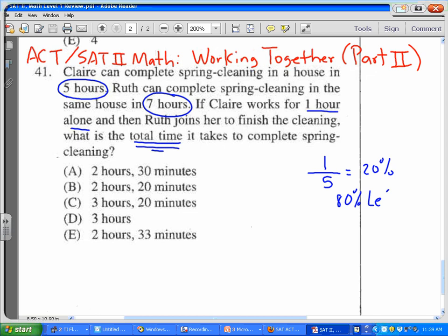that's left. That's how much they're going to work together, this 80%. So working together, we're going to use this formula that we saw in Part 1: it's going to be the product over the sum, five times seven divided by five plus seven, and that's going to be 35 over 12. That's how long it takes, 35 over 12...